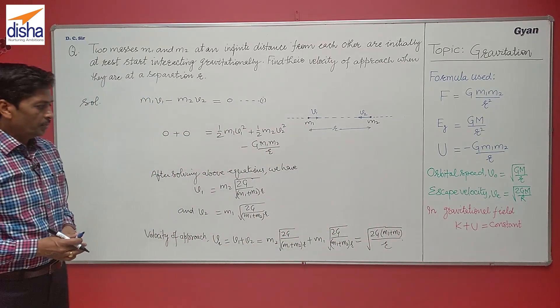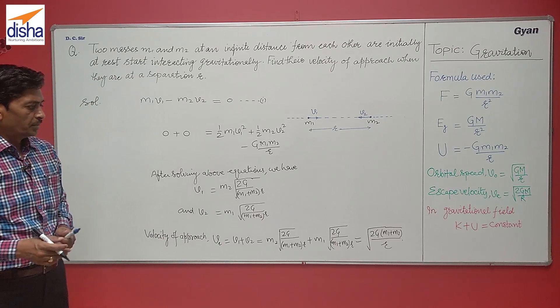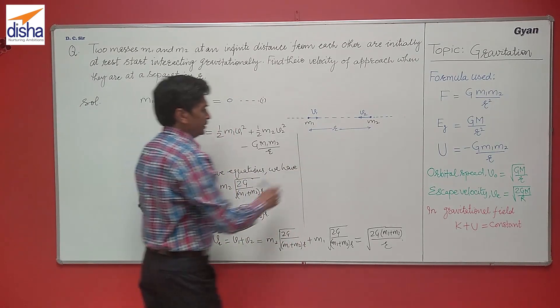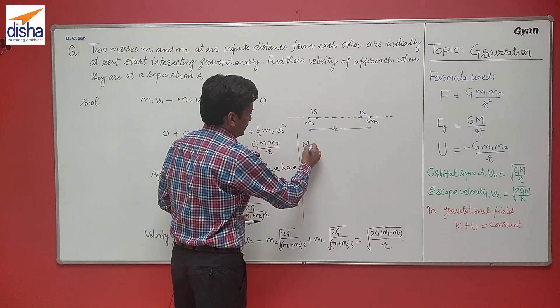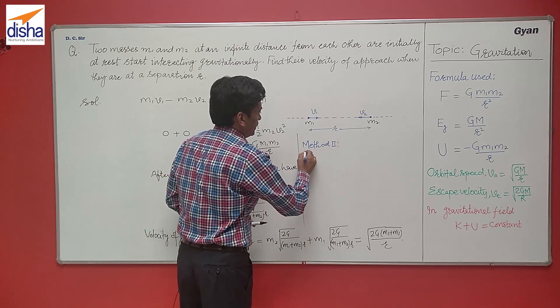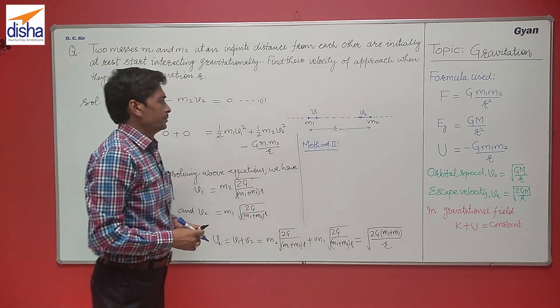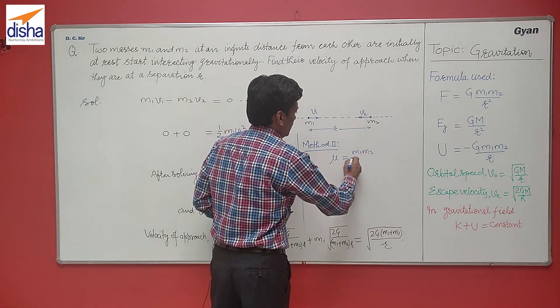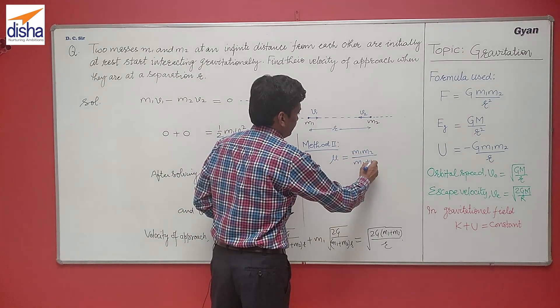Now the second method. The reduced mass of the system, μ, equals M1M2 upon M1 plus M2. So if the velocity of approach is Vr,